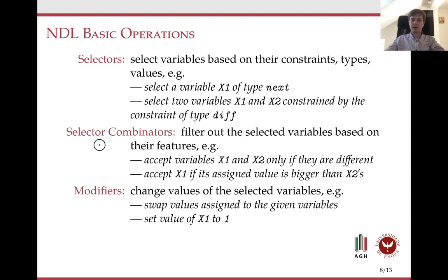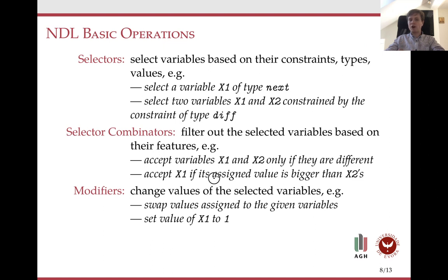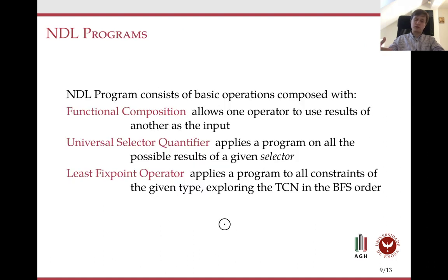Then we have selection combinators — a way to combine selections. For example, we can filter selections based on combined features of several variables, such as accepting x1 and x2 only if they are different, or accepting x1 only if its value is bigger than the value of x2. Finally, we have modifiers that change values of selected variables. We can swap the values of two given variables, or set the value of a variable to a given value. To get a truly complex neighborhood, we compose these operations.